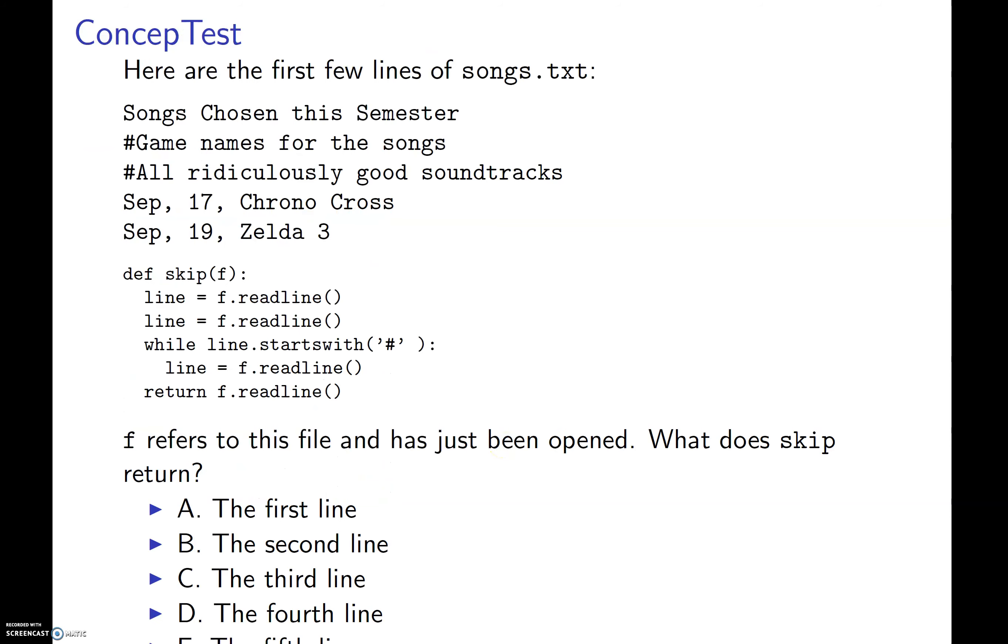Here are the first few lines of songs.txt: songs chosen this semester. Let's see, if we ran this set of code where f refers to this file and has been opened, what does skip return? I'm going to pause to save a little time on my video.